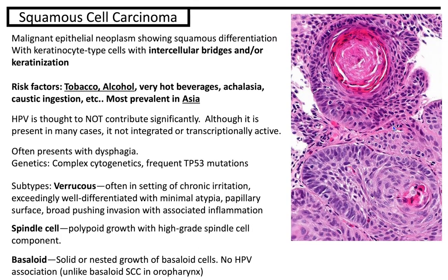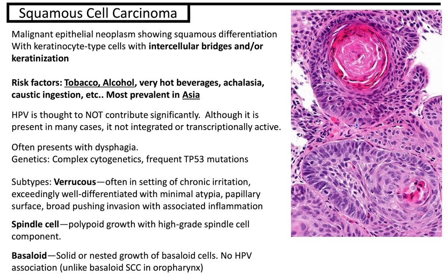Squamous cell carcinoma is a malignant epithelial neoplasm showing squamous differentiation with keratinocyte-type cells with intercellular bridges and/or keratinization. Risk factors include tobacco, alcohol, very hot beverages, achalasia, caustic ingestion, and it is most prevalent in Asia. HPV is thought to not contribute significantly — although present in many cases, it is not integrated nor transcriptionally active. Often presents with dysphagia. Genetics show complex cytogenetics with frequent TP53 mutations. Subtypes include verrucous — exceedingly well-differentiated with minimal atypia, papillary surface, broad pushing invasion; spindle cell — polypoid growth with high-grade spindle cell component; and basaloid — solid or nested growth of basaloid cells with no HPV association, unlike basaloid squamous cell carcinoma in the oropharynx.